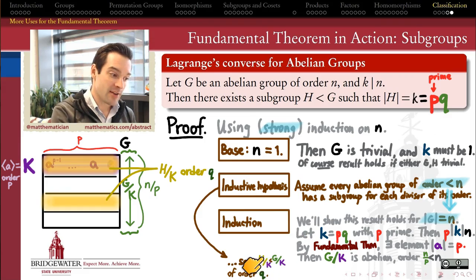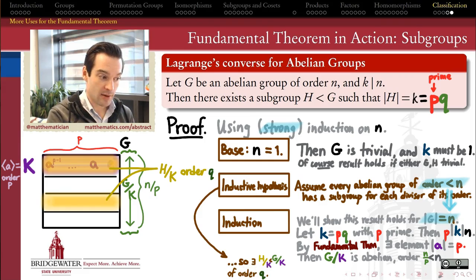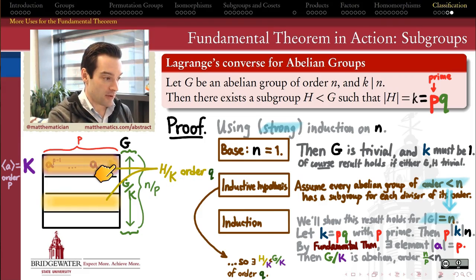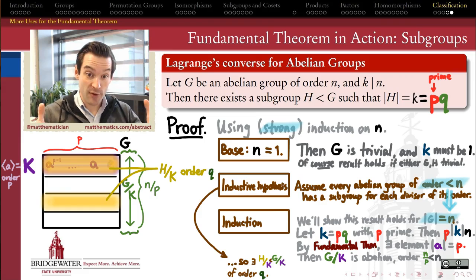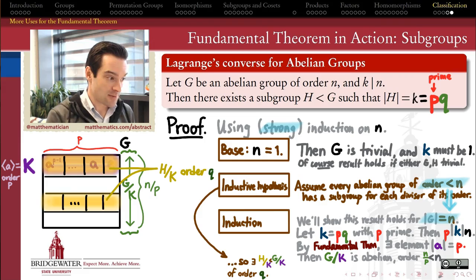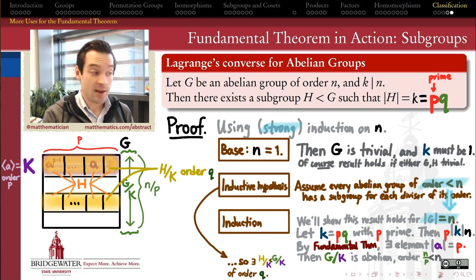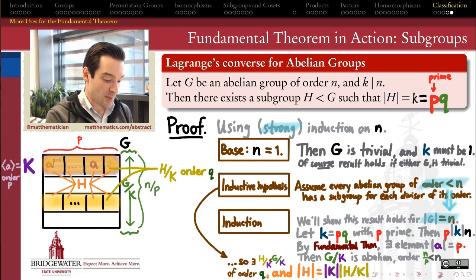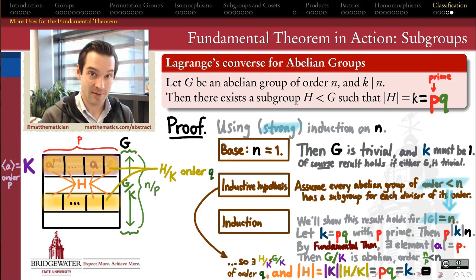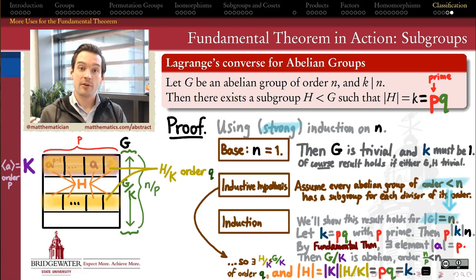Every subgroup of a quotient has the form H mod K for some subgroup H of G. So we call this subgroup H mod K, which has order q by our inductive hypothesis. We then lift that subgroup of the quotient up into a subgroup H of G itself. By Lagrange's theorem, the order of H equals the order of K times the order of H mod K, which is p times q. And p times q equals k. Therefore, for abelian groups, the converse of Lagrange's theorem is indeed true.